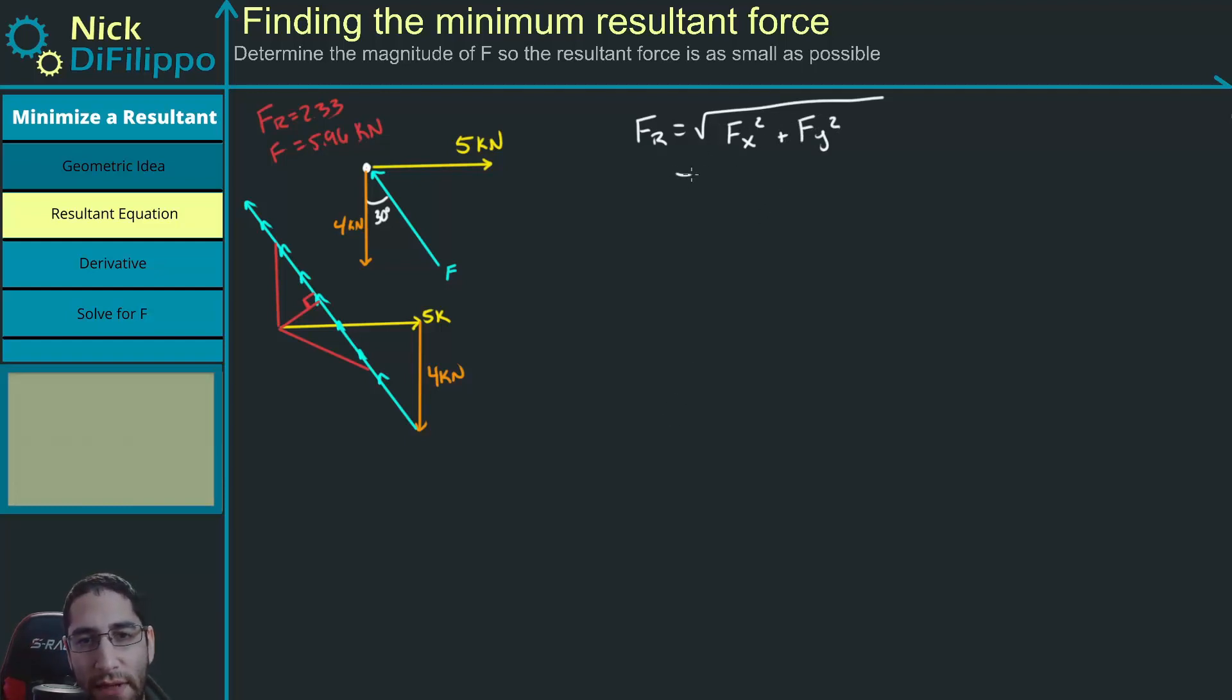Now, we need each of these terms. So what is the sum of my components in the x-direction squared? I'm going to say this way is positive x. Going up is positive y. So I'm going to have the square root of first, this is only in the positive direction. So it's a 5. F is going in the negative direction. So it's going to be minus F times the sine of 30 squared.